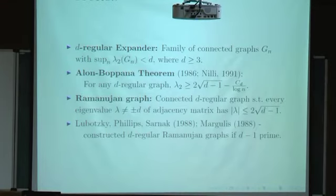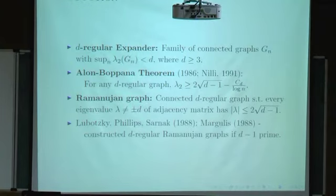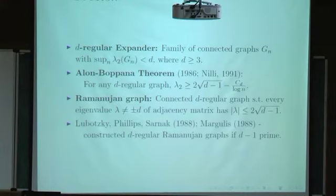It's not at all clear that such graphs exist. We now know they exist for every D, but the first constructions were in the case when D minus 1 is prime, by LPS and Margulis. The main reason they called it Ramanujan is that it used number-theoretic ideas related to Ramanujan's work — it's not that Ramanujan himself thought of these graphs.